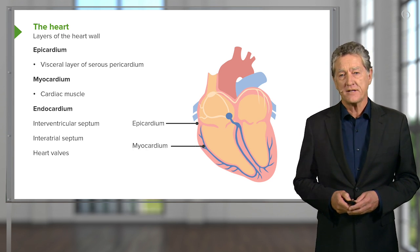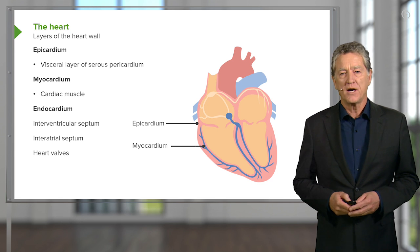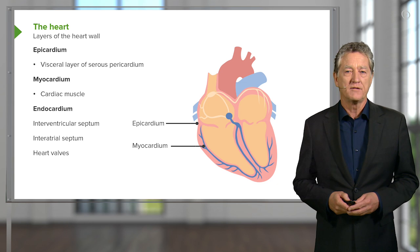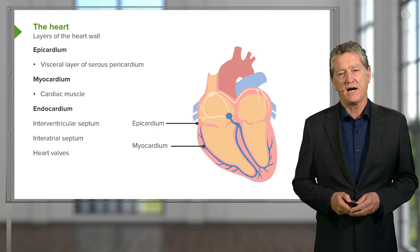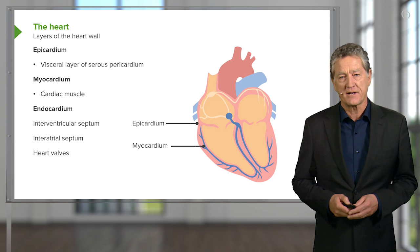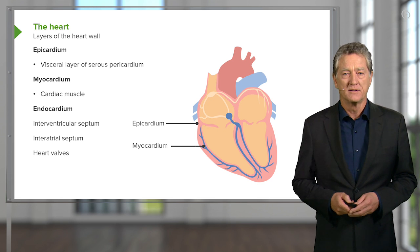The thickest layer is the myocardium. The myocardium is really full of cardiac muscle. That's the work part of the heart wall — the part that does the contracting or the pumping: the myocardium.